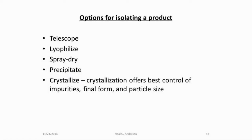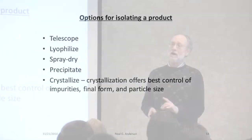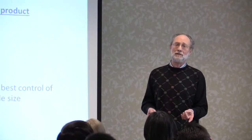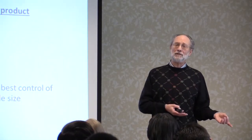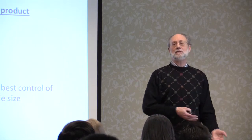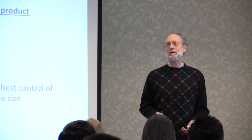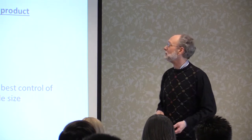How do you want to isolate your product? Well, if it's an intermediate you can always try to telescope it, and that way you avoid the issue — as long as the impurities that are present don't impede the subsequent processing downstream.